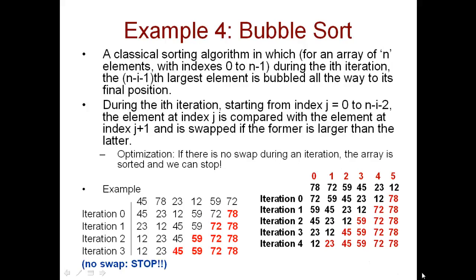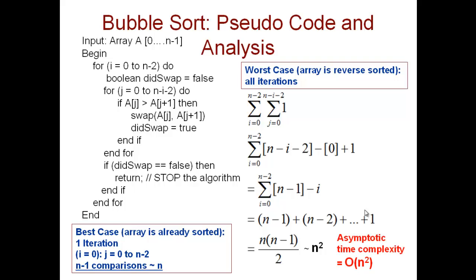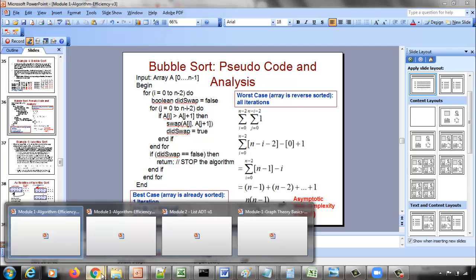When i is 1, j will run from 0 to n minus i minus 2, which is 6 minus 1 minus 2, that is 3. So the j loop will run up to index 3. We will be comparing 72 with 59 — 72 is greater than 59 so we do the swapping, 59 comes here and 72 comes here. We run the j loop only until 3 and then compare to its right — that is the last comparison for that iteration. Is this pseudo code clear related to the algorithm?